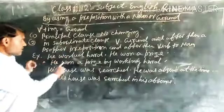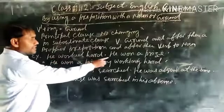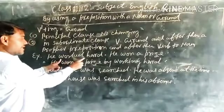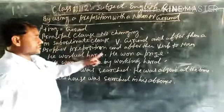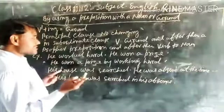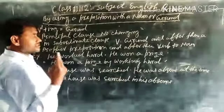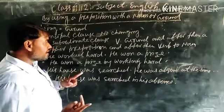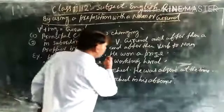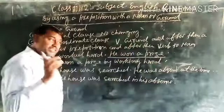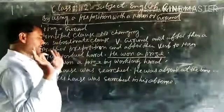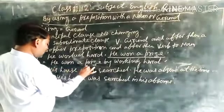First example: 'He worked hard. He won a prize.' Here are two sentences. First sentence: 'He worked hard.' Second sentence: 'He won a prize.' In this, there are two clauses — one principal clause and one subordinate clause. Here, 'He won a prize' is the principal clause, and in this clause you make no changes.